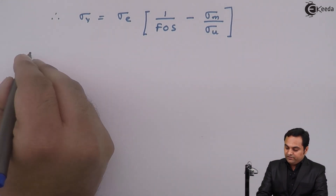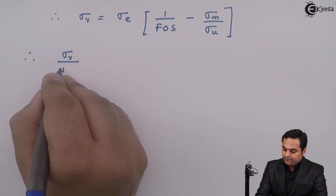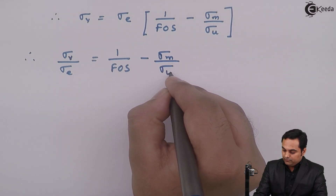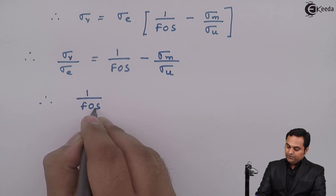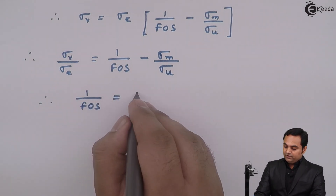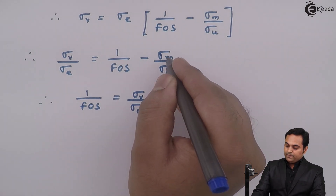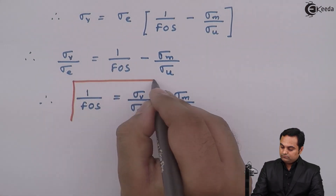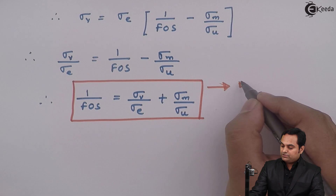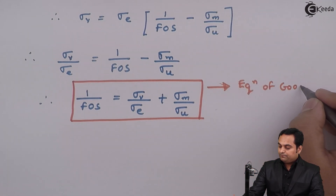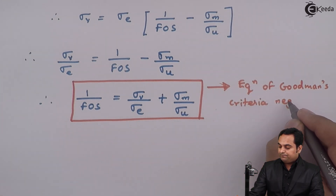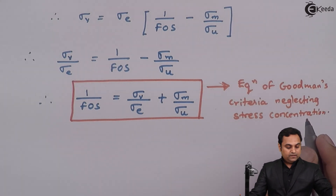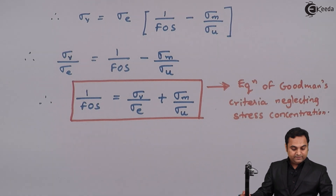This equation simplifies to: Sigma V upon Sigma E equals 1/FOS minus Sigma M upon Sigma U. Rearranging to isolate 1/FOS, we get the Goodman's criteria equation neglecting stress concentration: 1/FOS equals Sigma M upon Sigma U plus Sigma V upon Sigma E.